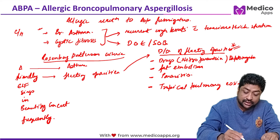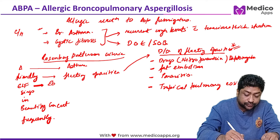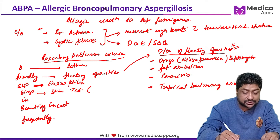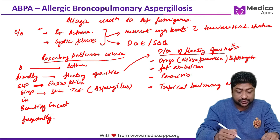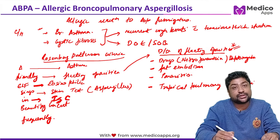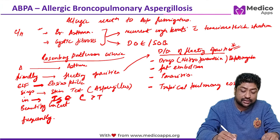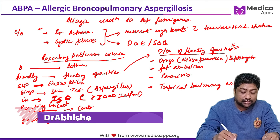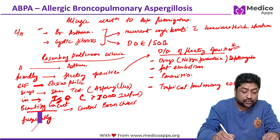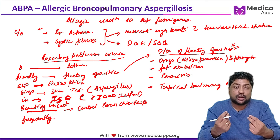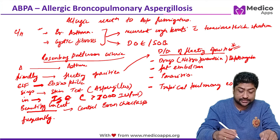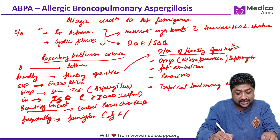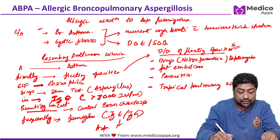Continuing the mnemonic: ELF stands for eosinophilia. S stands for skin test — skin test against aspergillus is positive. I stands for IgE — there is a high level of IgE, generally more than 1000 international units per mL. B stands for central bronchiectasis, caused by thick mucus plugs. C and F stand for fumigatus — IgE or IgG specific to Aspergillus fumigatus is elevated.